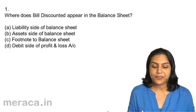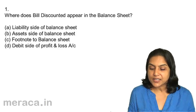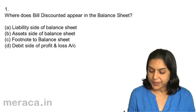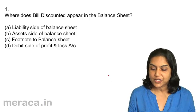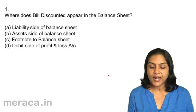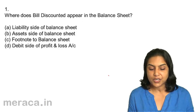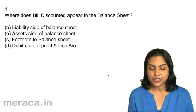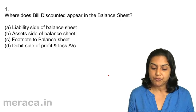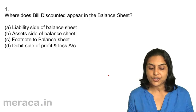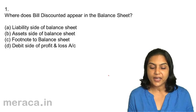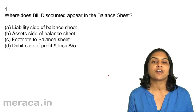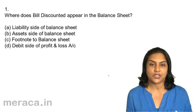Question 1: Where does bill discounted appear in the balance sheet? A. Liability side of the balance sheet. B. Asset side of the balance sheet. C. Footnote to balance sheet. D. Debit side of profit and loss account.